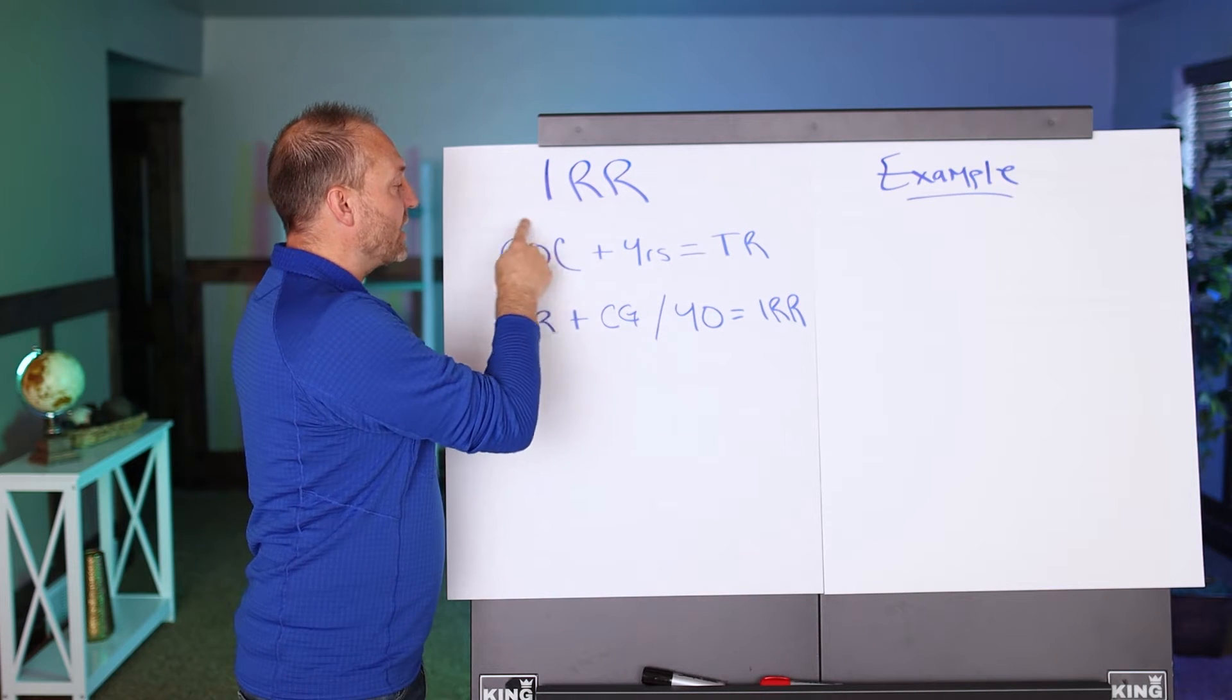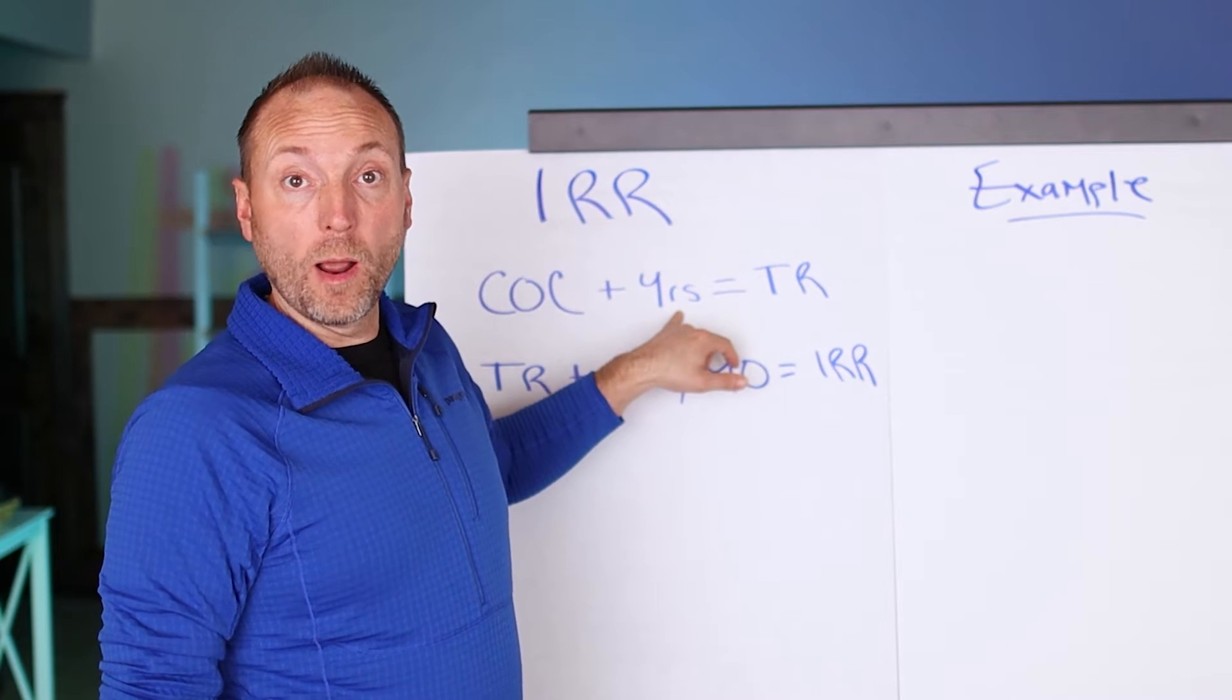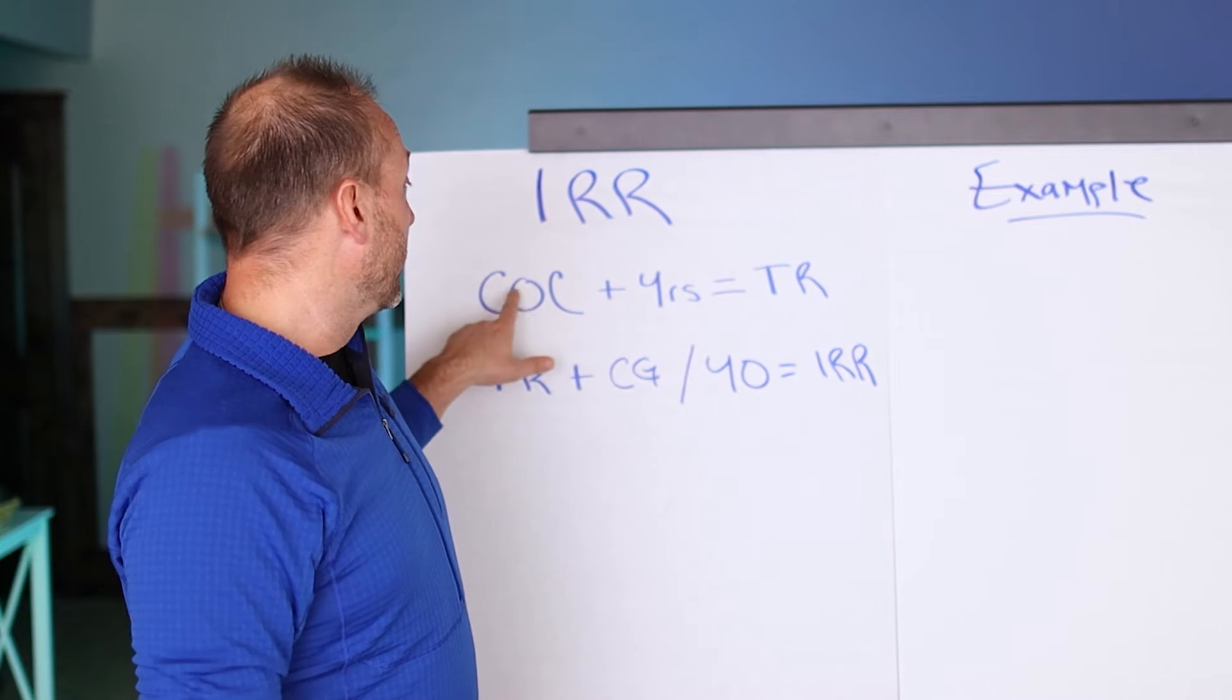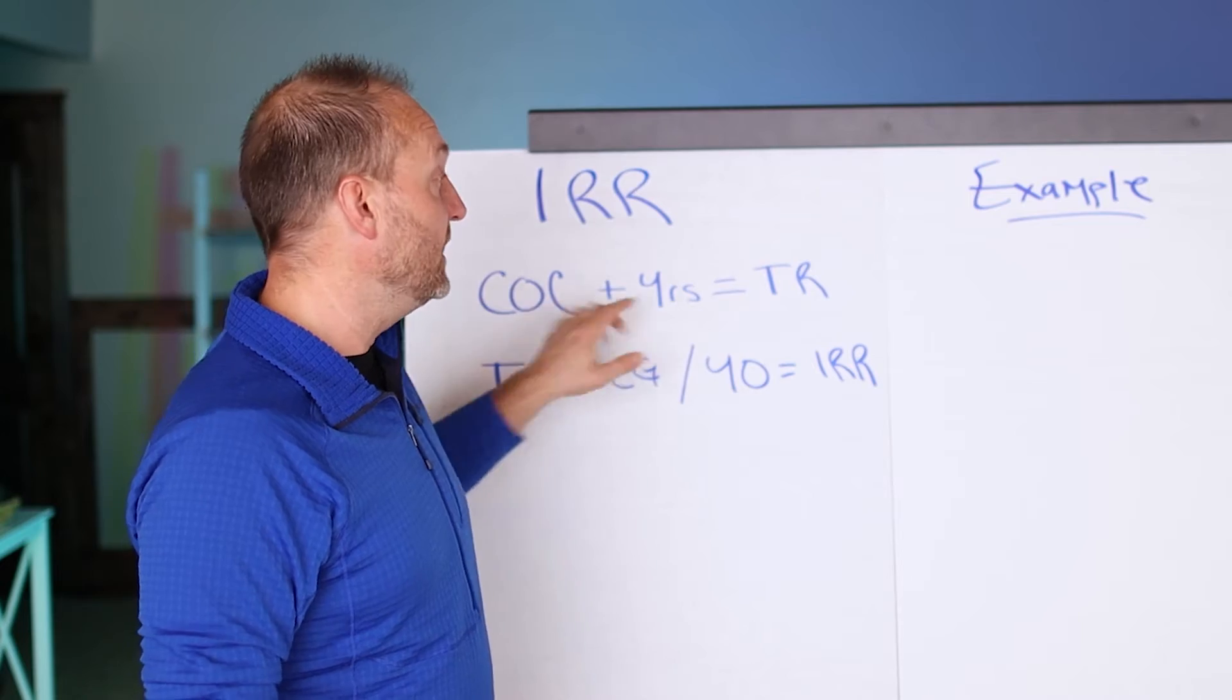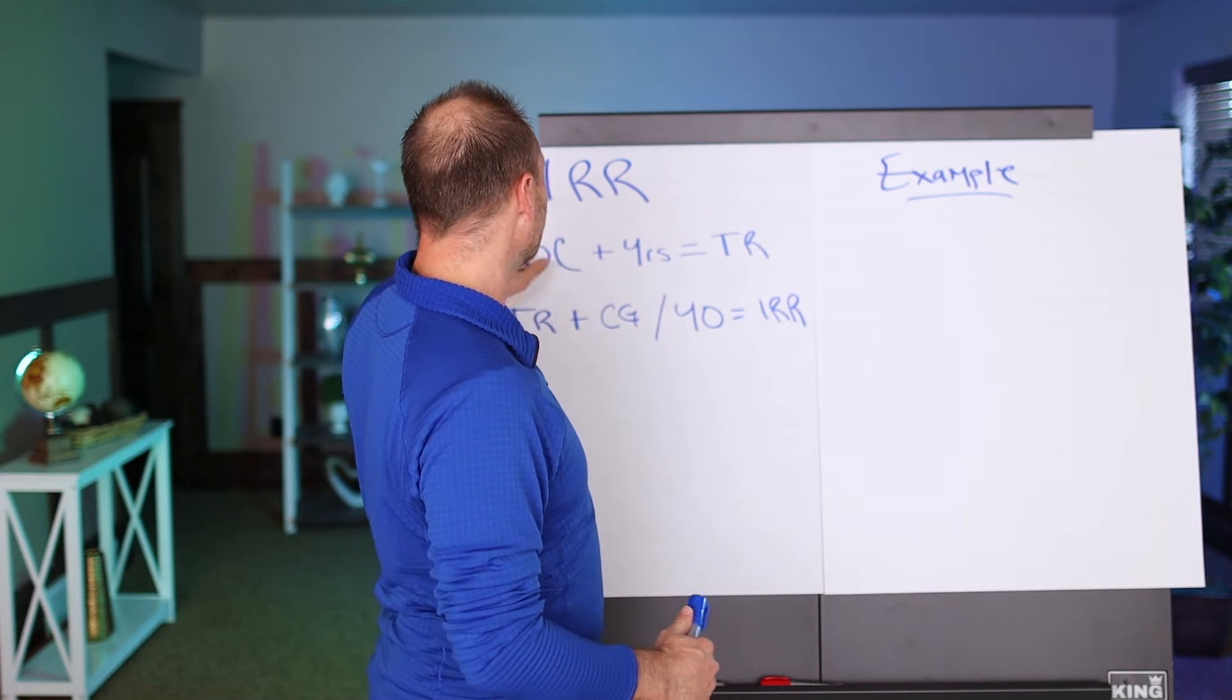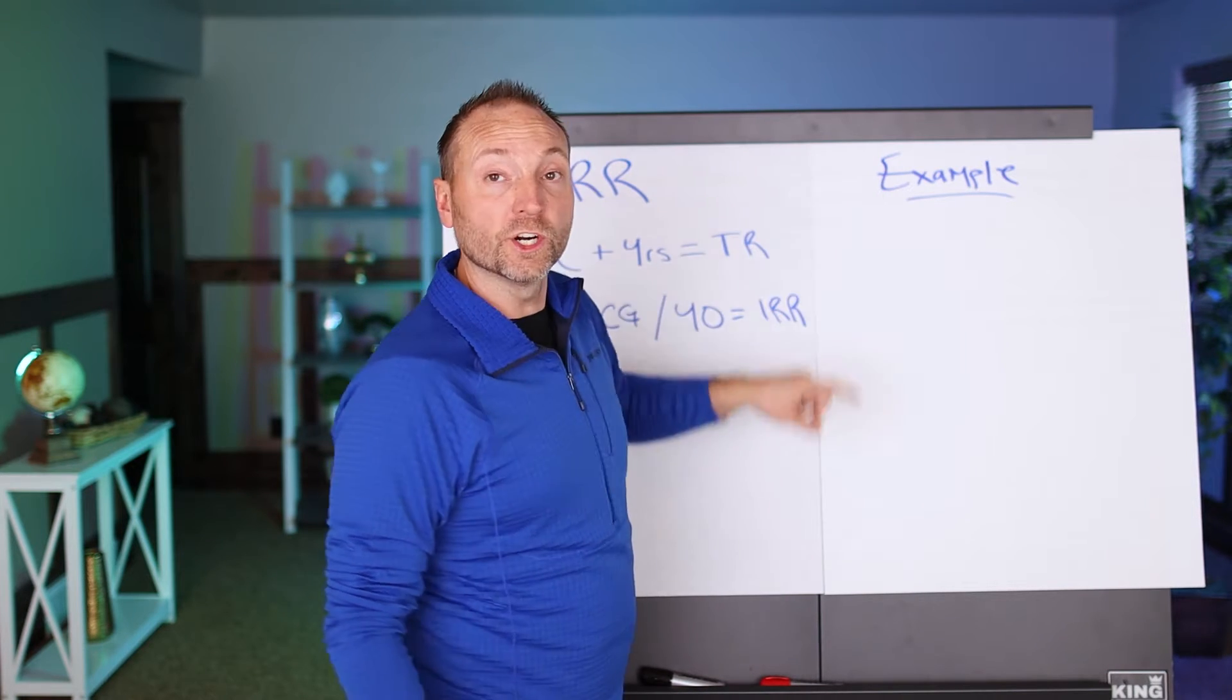So let's dive into what internal rate of return actually is. The first thing you need to do is take your cash on cash return, which is how much money you've made while you owned the property. Add that to the amount of years you owned the property. So if you made $5,000 year one and then you made $6,000 year two and $7,000 year three, you're going to add all of those years up. So you have three years and here's what I've made while I owned the deal, and that's what we call a TR, a total return. How much money you owned while you had the property. You take your cash on cash return and then you add up all the years you've owned the property on how much money you made in those years, and then you have this total return number.